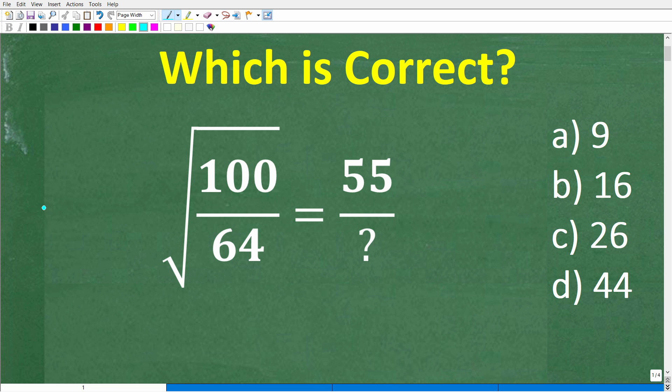Okay, so is this a difficult math problem to solve? Well, actually it is not. It's pretty straightforward, but let's see if you can figure it out. What we have is the square root of a fraction, 100 over 64. So the square root of 100 over 64 is equal to 55 over what number? The question is, we're looking for this number, this denominator, in this fraction to the right.